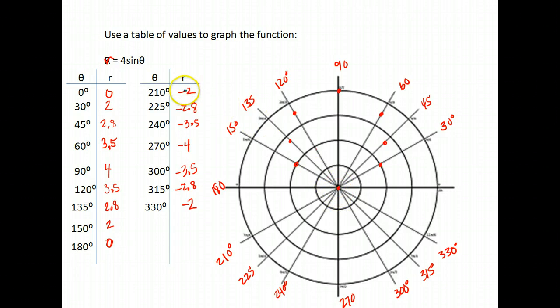As we get to these next ones, 210, negative 2. So we open all the way up to 210. Here's our 210 degree angle, but we go negative 2, so we go away from our angle on that line. So we go negative 2. Notice we already have that point.